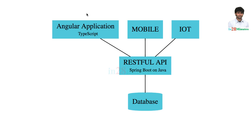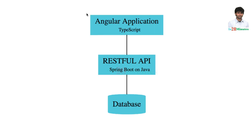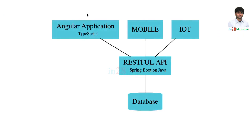Imagine you want to develop a native mobile application in the future — an iPhone app or an Android application. Maybe you'd want to connect with an Internet of Things device. In such situations, you can completely reuse the back-end API that is being exposed. A full-stack application with a separate back-end RESTful API gives you more options to extend your architecture and create applications for different devices.